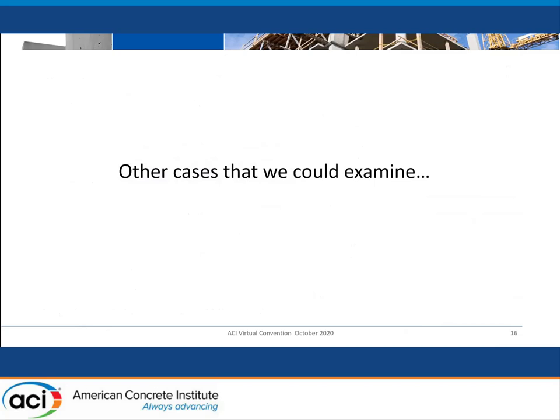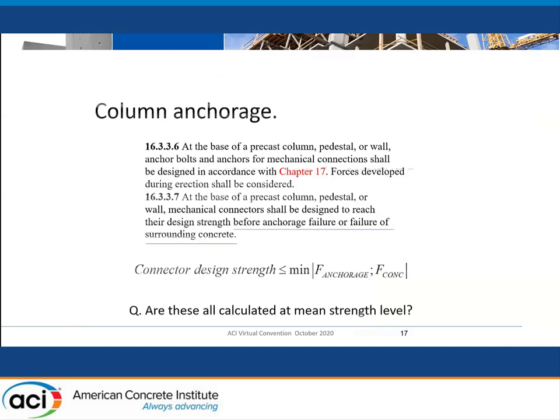I have some slides here to talk about other cases and I'll zoom through these quickly. We can always look at column anchorage. Right now we have some language in Chapter 16 that talks about precast elements and how they're supposed to be anchored — it talks about 'shall be designed to reach their design strength before anchorage failure or failure of surrounding concrete.' Of course that's an allusion to what we're talking about, but there's no reference to the things in Chapter 17. There's clearly a great aversion to using Chapter 17 for that kind of thing, and I think it leaves the designer in a bit of a quandary. The code should be a little more literal about how this stuff should be done.